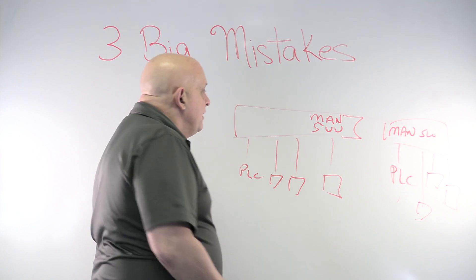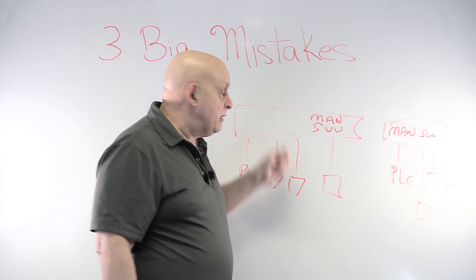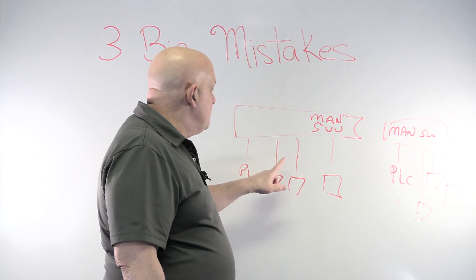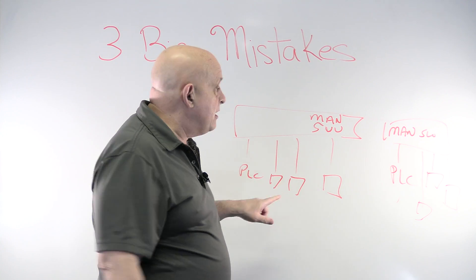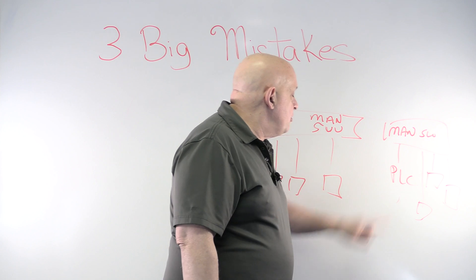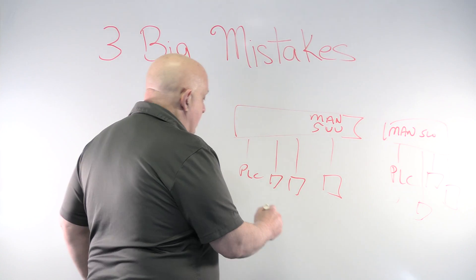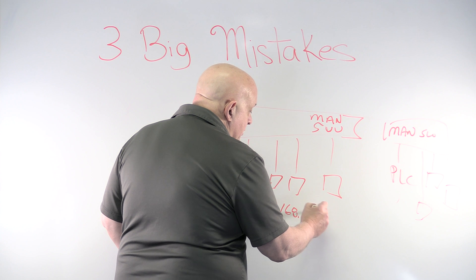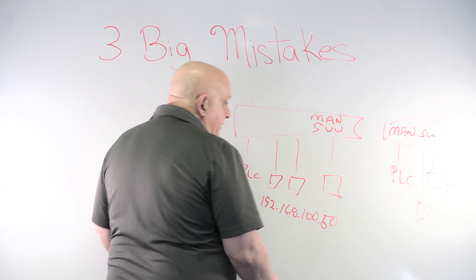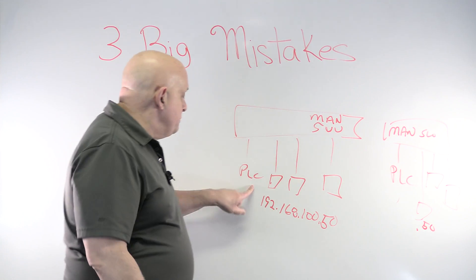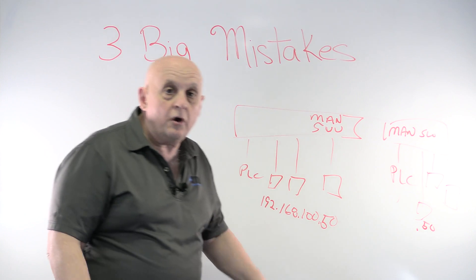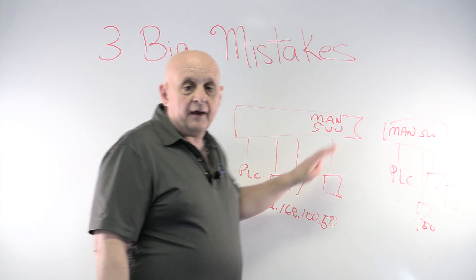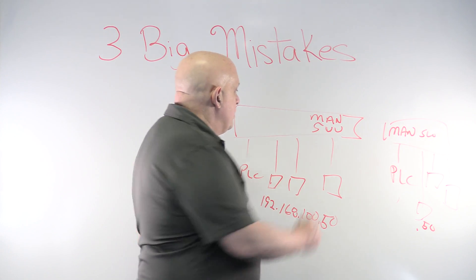This segmentation approach offers a number of advantages. Because you're using managed switches you can monitor each segment much better. You can also address devices identically across cells doing the same function — so if you find a bug in one PLC program you can just copy it to the other because everything is addressed the same. For example, if all your drives use private addresses like 192.168.100.50, a drive in the next cell is also .50, and you just copy the PLC program over. No re-addressing needed.